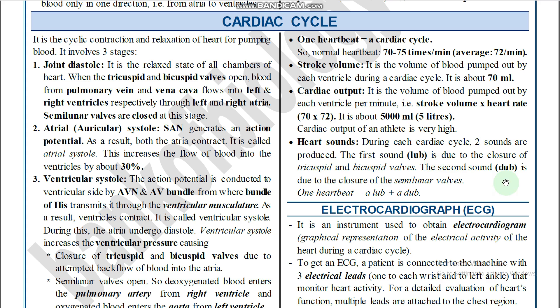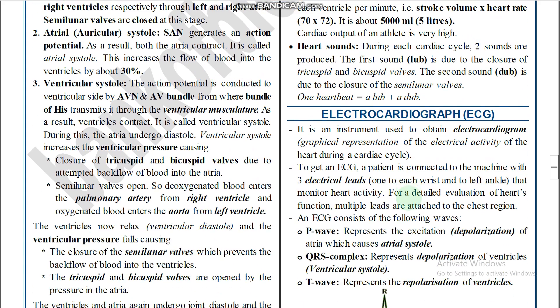Heart sounds are lub and dub. Both heart sounds are produced by the closure of valves only. The first heart sound — lub — is produced by closure of the tricuspid and bicuspid valves. The second heart sound — dub — is produced by closure of the semilunar valves. One heartbeat consists of one lub and one dub.